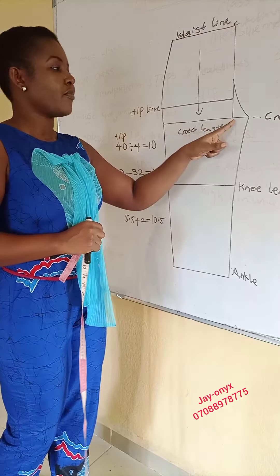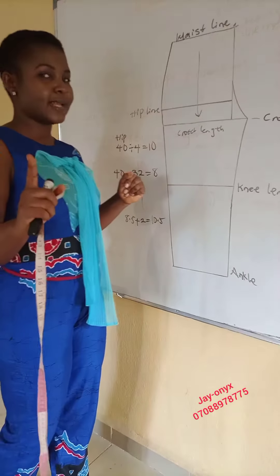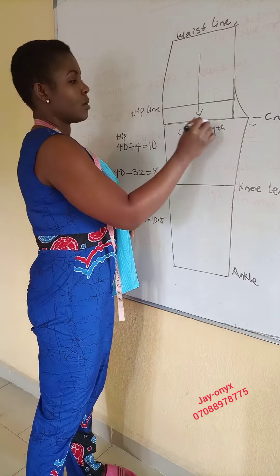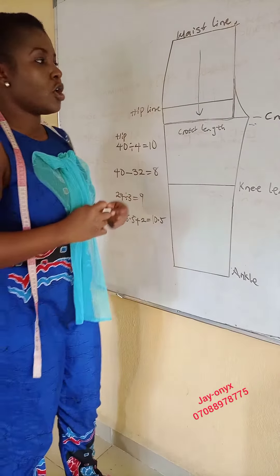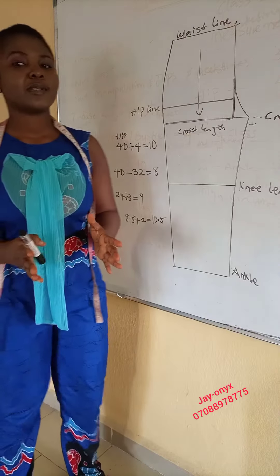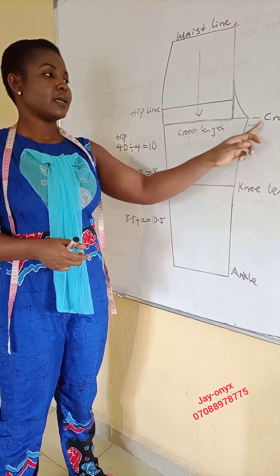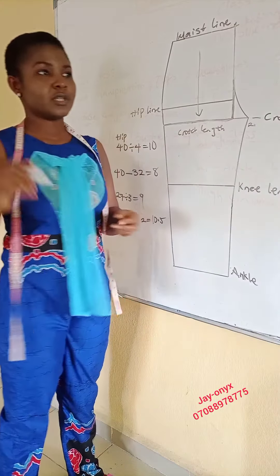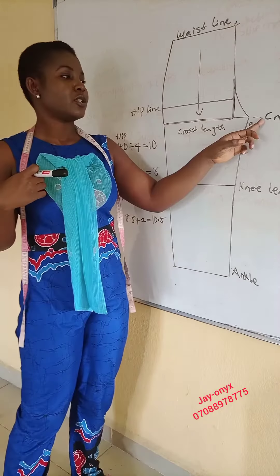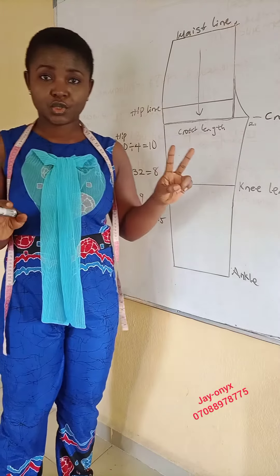How do we get our crotch extension? Remember that the box was formed using the hip divided by four. From that line, whatever we're adding is the crotch extension. There are several ways to get the crotch extension. Number one: on the average, simply add 2 inches from that line. Two inches can work for almost everybody, so Method 1 is just to add 2 inches and continue with your drafting.